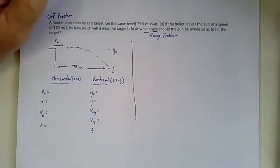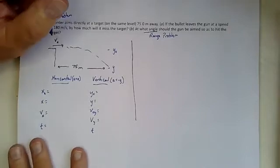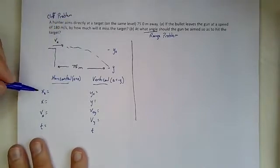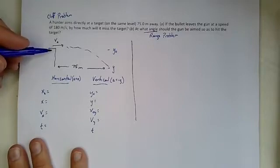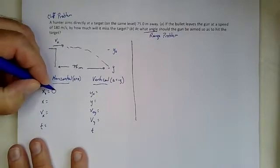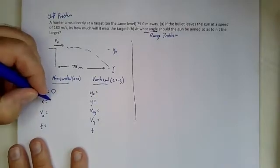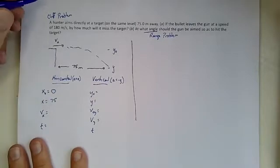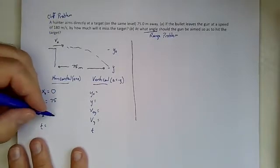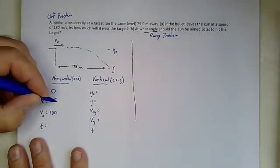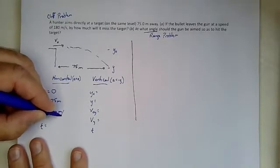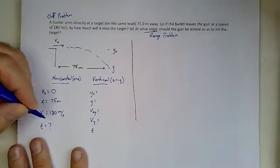Now for the vertical part, there's the initial height, there's a final height, which is what we're looking for. Initial velocity in the y direction, final velocity in the y direction. Acceleration term we're going to leave out because it's minus g and then we'll have time. So now let's take a look at what we've got for givens. We would use the initial x if we had like a head start or something, but we don't have anything like that. So we just do that zero. And this is going to be 75. And then this is going to be 180 meters per second.